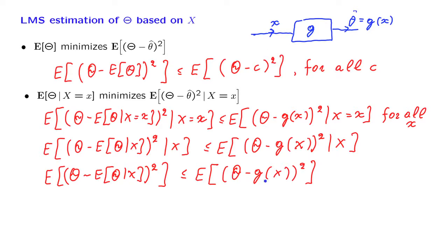This inequality says that the overall mean squared error, if we use the conditional expectation as an estimator, is less than or equal to the mean squared error that we would obtain if we had used any other estimator. We obtain an observation which is a random variable, we process that random variable to come up with an estimator which is a function of the random variable we observe, and is itself a random variable.